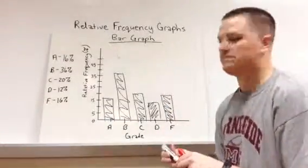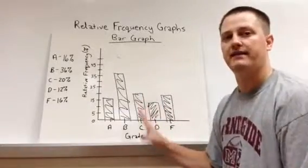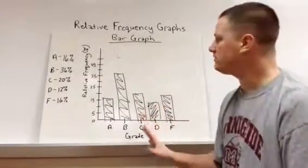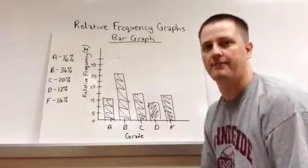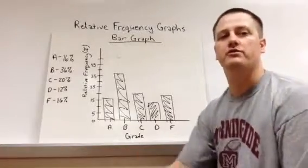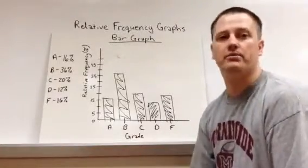Now remember, even though this is a bar graph, this is still not giving us raw numbers. It's just giving us percents. That's the idea of a relative frequency graph. Now we're going to make the pie chart, which is what we more commonly see with percents.